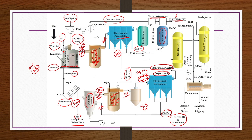Any unreacted H2S or SO2 proceeds to a cold stage catalytic reactor operating at approximately 200°C. Before sending gases from the hot reactor to the cold reactor, they are cooled in a low-pressure heat recovery boiler generating steam at approximately 45 atmospheres for electricity. After cooling to about 150°C, gases go to the cold stage catalytic reactor where SO2 and H2S react to give water vapour and sulphur vapour.